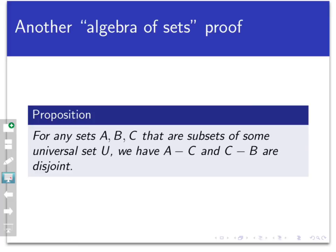Both methods are okay, some work better in some situations than others, so we want to have two different methods in our tool bag. We're going to prove this proposition that says for any sets A, B, and C that are subsets of some universal set U, we have the set A minus C and the set C minus B are disjoint. Remember, we defined disjoint sets to be sets whose intersection is empty, so we're going to work with that.